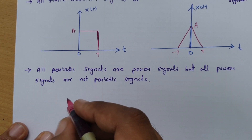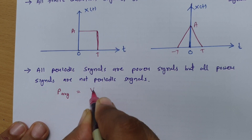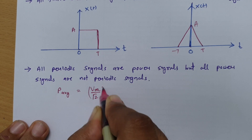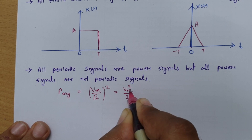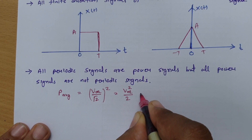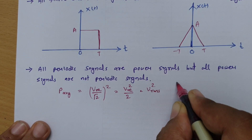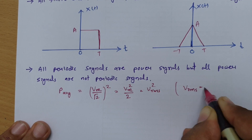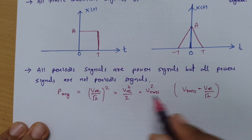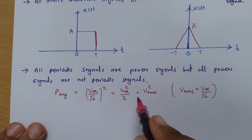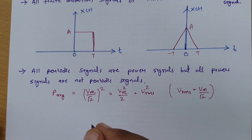If a sinusoidal signal is given, then directly we can calculate average power of it. Average power is (Vm/√2)², which equals Vm²/2, or one can say it is Vrms². The reason is we all know the RMS value of voltage is always Vmax/√2. So average power equals the square of RMS voltage for a periodic sinusoidal signal.